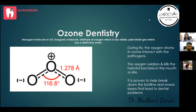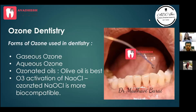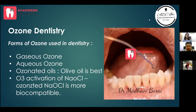O3 is the unstable form; O2 is stable. Ozone dentistry is practiced in three forms: ozone oil (most stable), ozone water (aqueous ozone), and ozone gas (produced only through an ozone generator, as it is highly unstable). If you don't yet have an ozone generator, you can start with ozone oil. After this lecture, if you feel motivated, you can start with ozone oil right away.